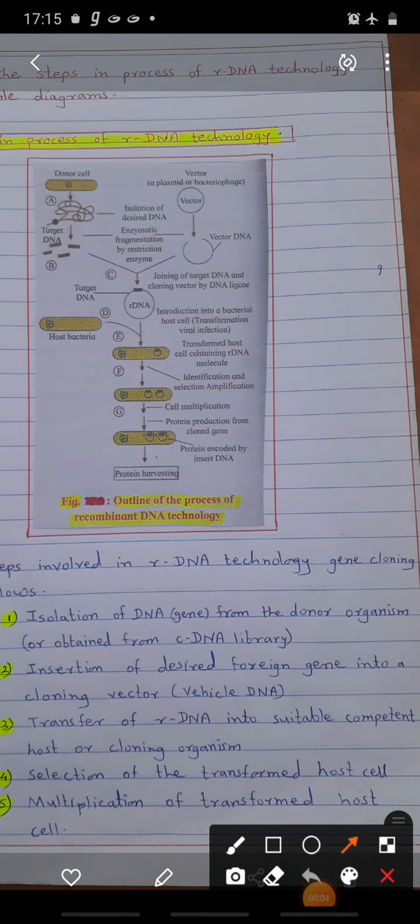Hello students, now we study the steps in the process of rDNA technology, that is recombinant DNA technology. It involves a total of five steps. The first step is isolation of DNA, that is the gene from donor organism, or obtained from cDNA, that is complementary DNA library.